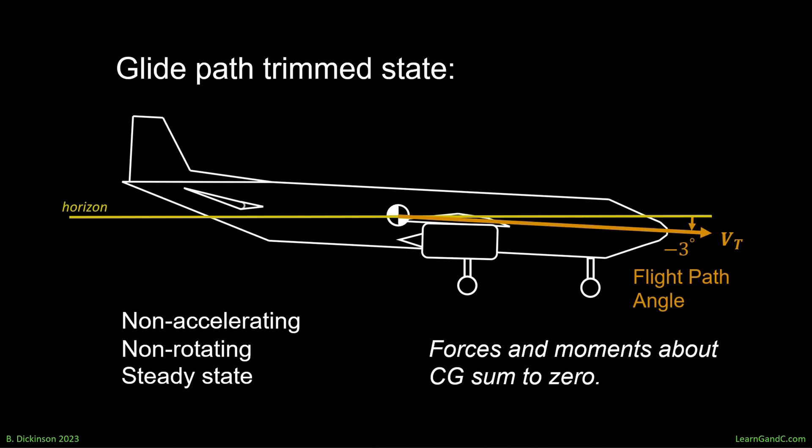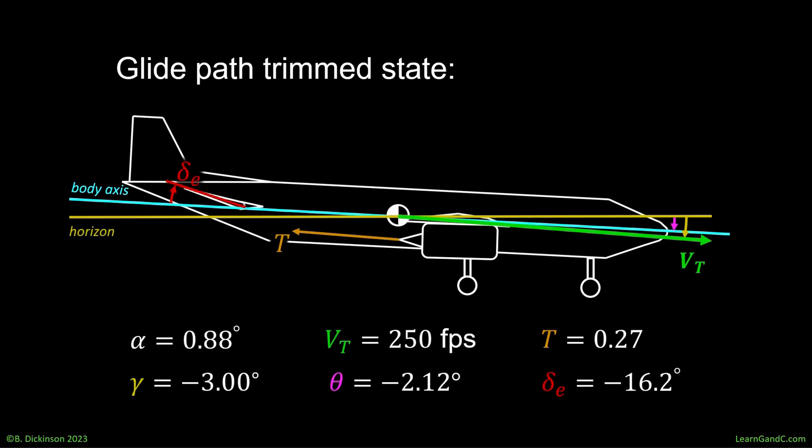Here, we trim about the glide slope for automatic landing control. This is non-accelerating, non-rotating, steady-state flight, where the forces and moments about the center of gravity sum to zero. Applying the trim routine from section 1.7, we arrive at the trim condition.